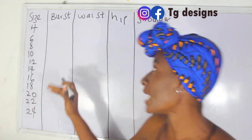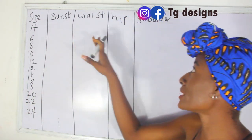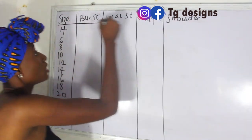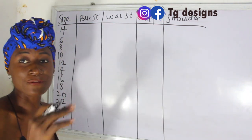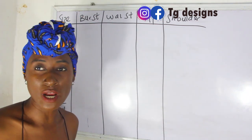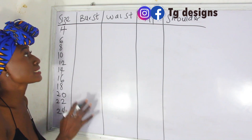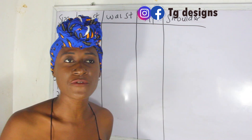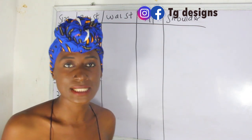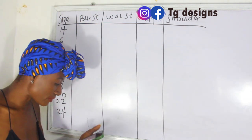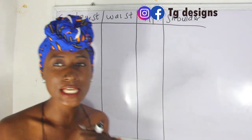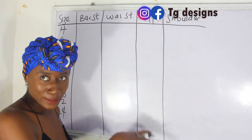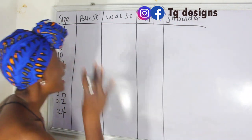This first part covers your bust, waist, hip and shoulder — these are the basics of every female size chart. So the first measurement we have is our bust measurement.